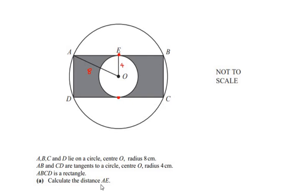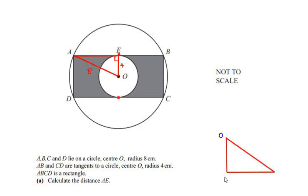We have to calculate the distance AE. Let us consider triangle OAE. Since AB is a tangent and OE is the radius, we know the property that the tangent always makes a 90-degree angle with the radius. So this forms a right-angled triangle, with O at one vertex, E at another, and A at the third.